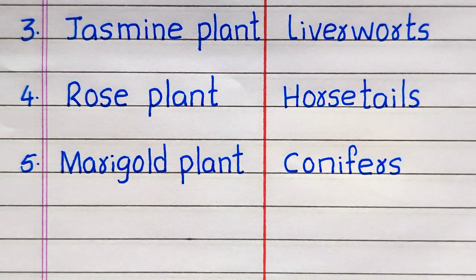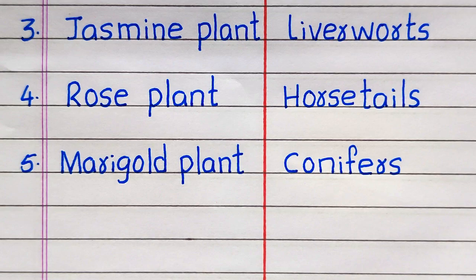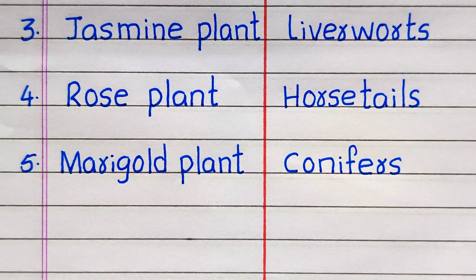Name of the third flowering plant is jasmine plant, fourth rose plant, fifth marigold plant. Name of the third non-flowering plant is liverworts, fourth horsetails, fifth conifers.